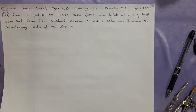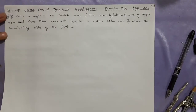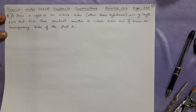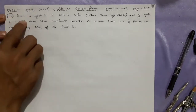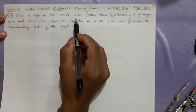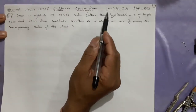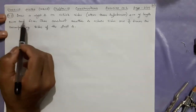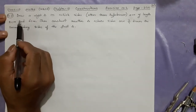Welcome viewers to the SD Online Classes. Here we are doing Class 10 Maths MBSE Chapter 10 Constructions, Exercise 10.2, page number 235. This is the last question of this type in this exercise. The question is: draw a right triangle in which sides other than the hypotenuse, that means the perpendicular and the base, are of length eight centimeters and six centimeters.